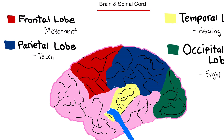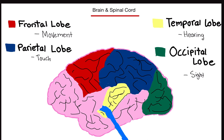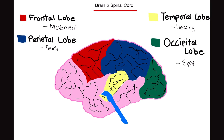We're going to do the brain first. The brain can be basically broken up into four lobes. The four lobes are the frontal lobe, the parietal lobe, the temporal lobe, and the occipital lobe.